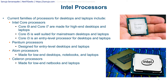Pentium processors are designed for entry-level desktops and laptops and are still available for applications like mini PCs. Atom processors are made for low-end desktops, notebooks, and laptops but are rarely chosen in 2022. Celeron processors are made for low-end netbooks and laptops and may be popular in some regions for low-cost computing. In North America and Europe, the i3 is typically the lowest entry-level processor seen in use.